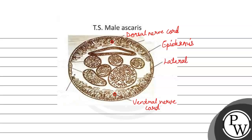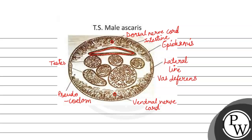इनके अलावा इसमें present होता है एक intestine and reproductive organs that are testis and vas deferens. ये सारे organs हमारे present होते हैं in a body cavity. So, these are the various structures that are present in male Ascaris. I hope you understood the question well. Best of luck.